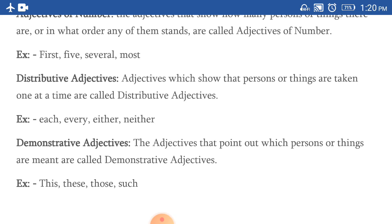Then comes demonstrative adjectives. The adjectives that point out which persons or things are meant are called demonstrative adjectives. This is your pen. These are my books. So this is demonstrative adjective.